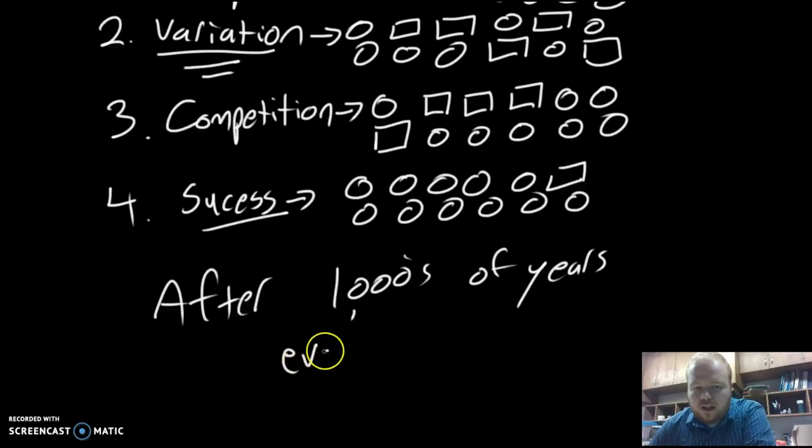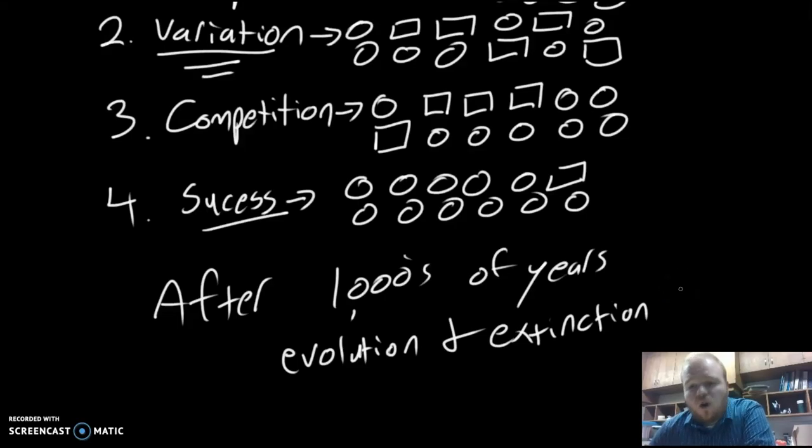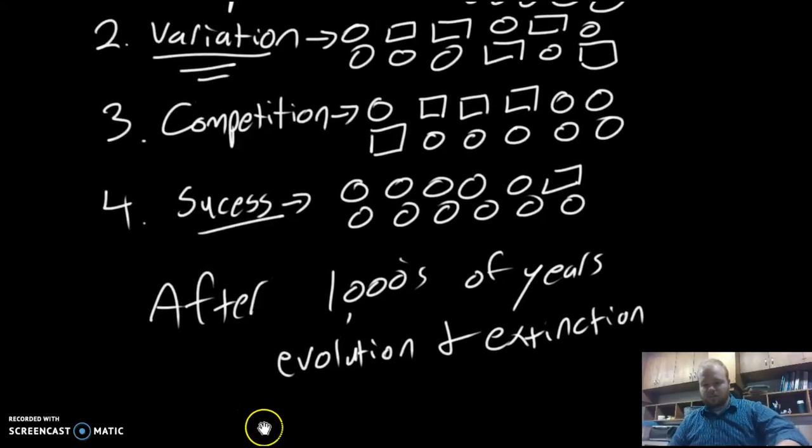This keeps going on for thousands of years. After thousands of years, you'll result in evolution and likely extinction—the members of the species being outcompeted will eventually phase off and probably go extinct. Though not always, organisms can descend from the same branch and still live on. Evolution and extinction are often intertwined with each other.